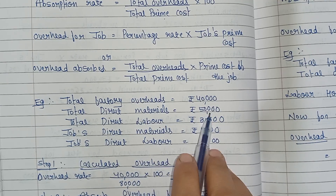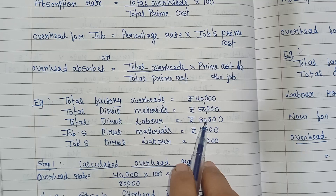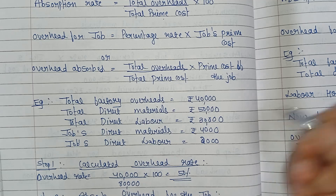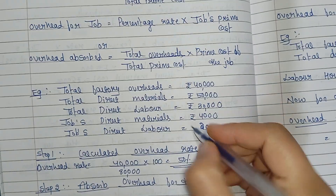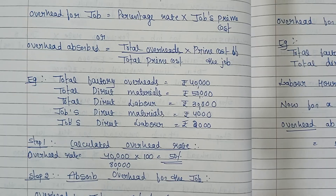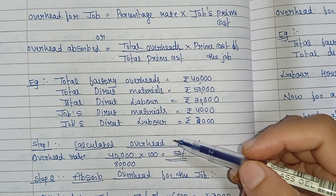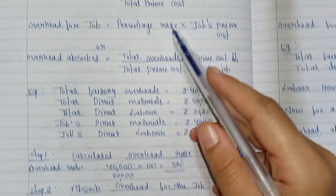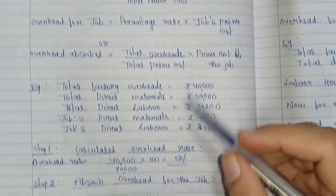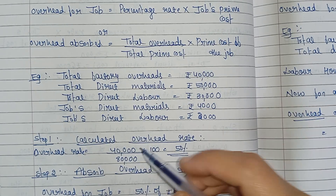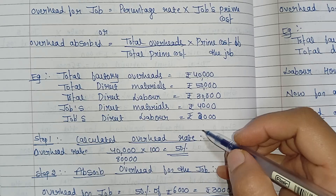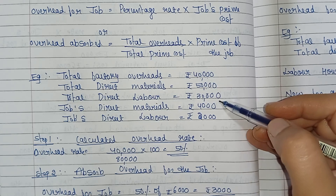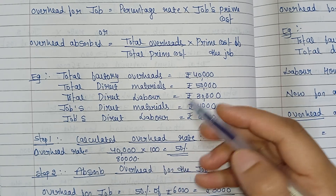Let's see the example. Total factory overheads are ₹40,000; direct materials ₹50,000; direct labor ₹30,000; job's direct materials ₹4,000; and job's direct labor ₹2,000. Step one is the calculation of overhead rate: total overheads divided by total prime cost into 100. Total overhead is ₹40,000. Prime cost is direct material plus direct labor — direct expenses are not given — so ₹50,000 plus ₹30,000 equals ₹80,000.